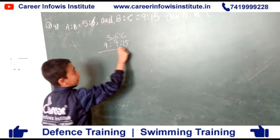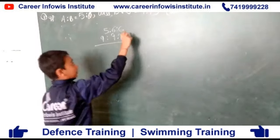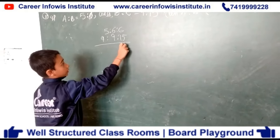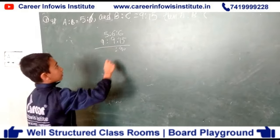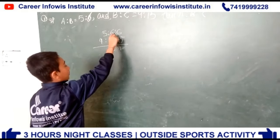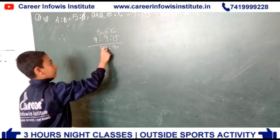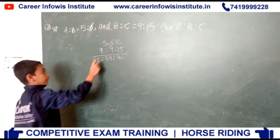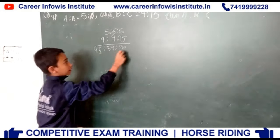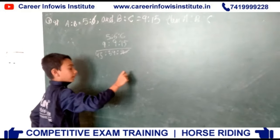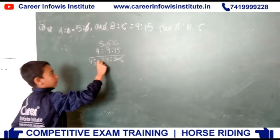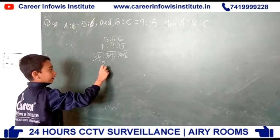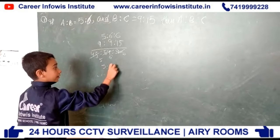We multiply by 6, which gives us 90 on both sides. It is divisible by 90. Then we divide by 9, 10, 6 and 5. The result is 5 ratio 6 ratio 10.